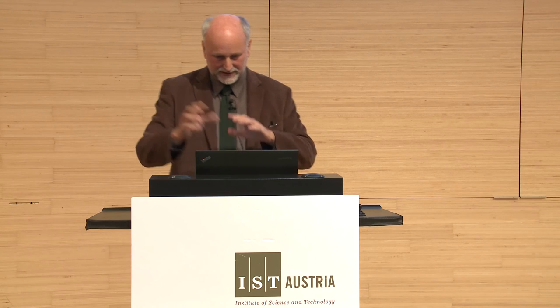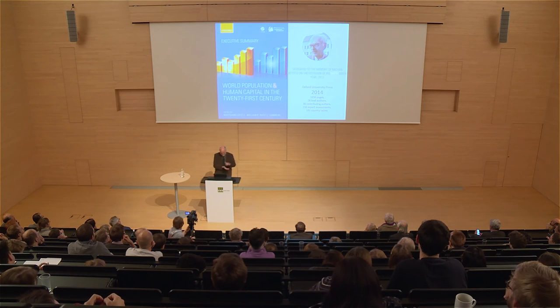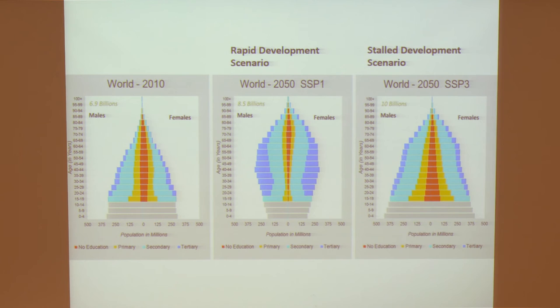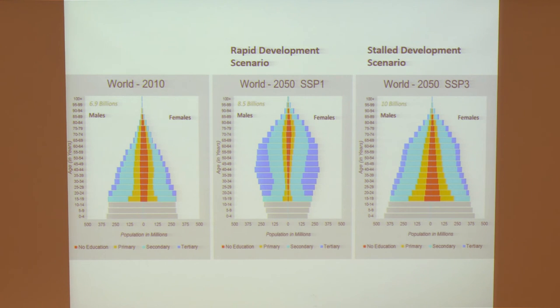At Nathan Keyfitz's 100th birthday we had a massive thousand-page volume with Oxford University Press giving alternative scenarios for all countries of the world and summarizing the state of knowledge. Here you see alternative age pyramids for 2050: the SSP1 very rapid development changes the world pyramid to a highly educated population — on average the world would look like Europe looks today — whereas if we have stagnation, we would still have very sizable uneducated populations and a much bigger world population size.